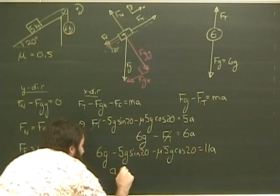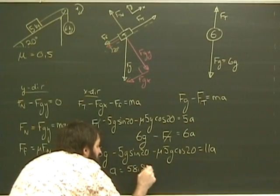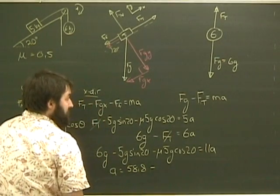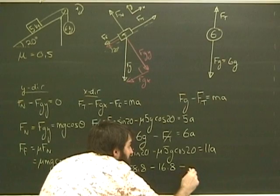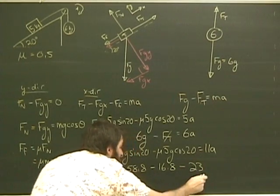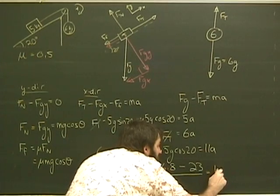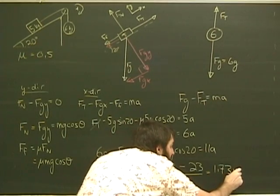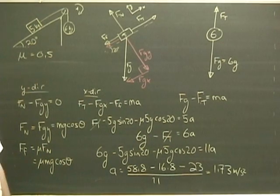So rearranging, I get that A equals 58.8 minus 16.8 minus 23. All of this is going to be divided by 11, giving us an answer of 1.73 meters per second squared. So that's my acceleration.